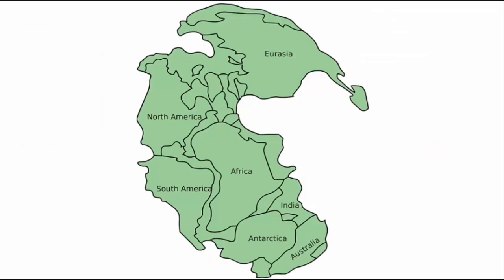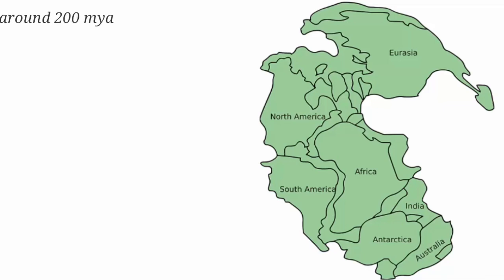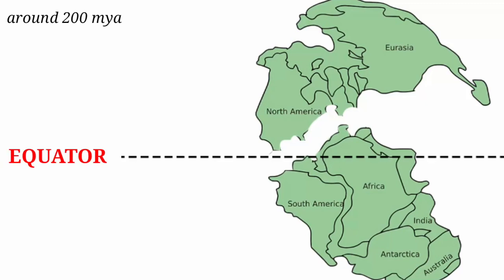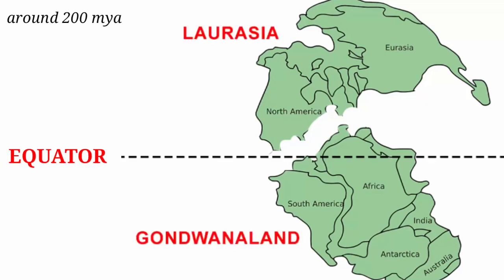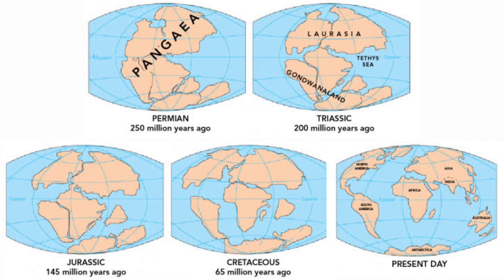According to Wegener, all continents formed a single continental mass. This supercontinent was named Pangea, which means 'all-earth.' It was surrounded by a mega-ocean called Pantalasa, meaning 'all-water.' Wegener argued that around 200 million years ago, Pangea started to break into two smaller supercontinents called Laurasia in the north and Gondwana Land in the south, during the Jurassic period. These smaller supercontinents then broke into the continents we know today, which separated and drifted apart since then.